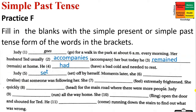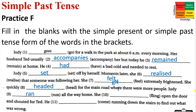Continuing Practice F: 'Judy set off by herself.' 'Set' — base and past form are the same. 'Moments later, she realized that someone was following her.' She felt extremely frightened. 'She quickly headed for the main road where there were more people.' 'Judy ran all the way home.' Past form of 'run' is 'ran.' 'She flung open the door and shouted for Ted.' 'He came running down the stairs to find out what was wrong.'